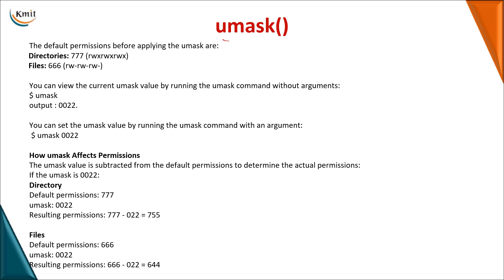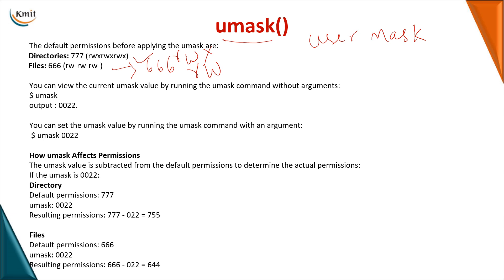The last system call covered here is umask, which stands for user mask. When creating a directory or file, it has default permissions. For directories the default is 777, meaning all three user types can perform read, write, and execute. For files the default is 666, meaning read and write only. Using umask, you can find out what permissions are assigned to a created file or directory. Calling umask without arguments returns the currently assigned permissions.